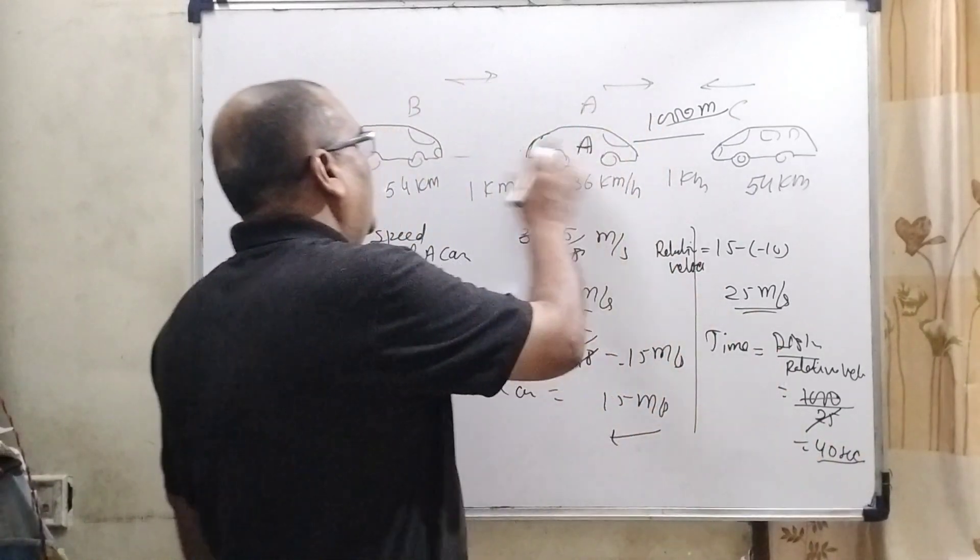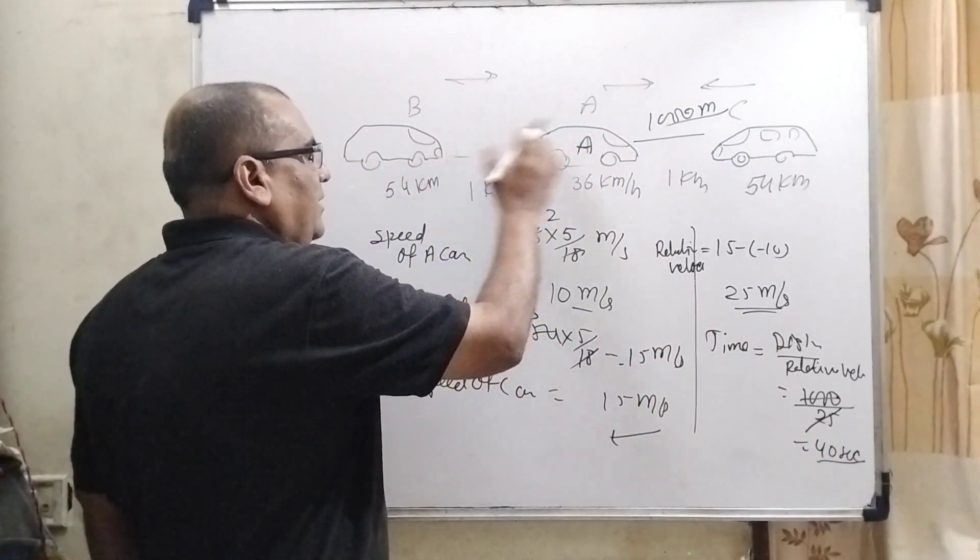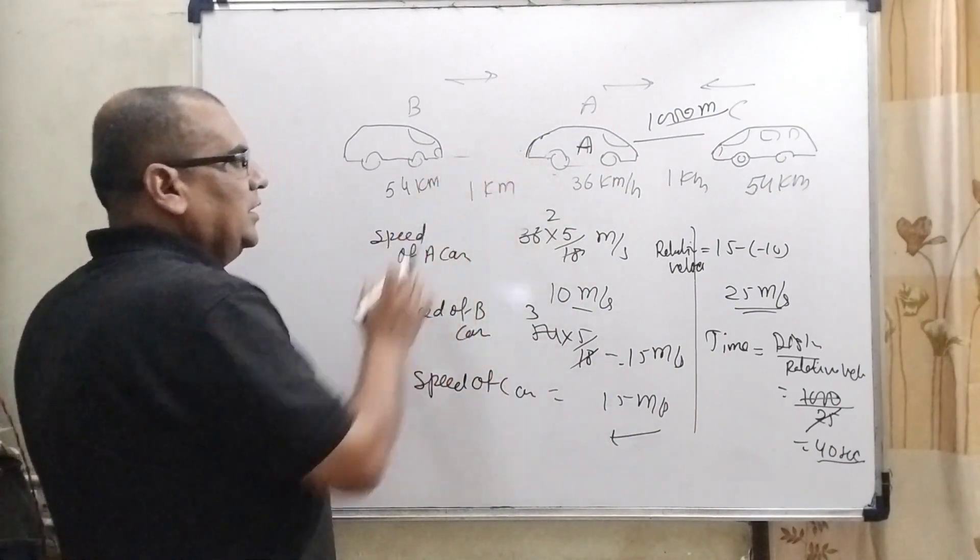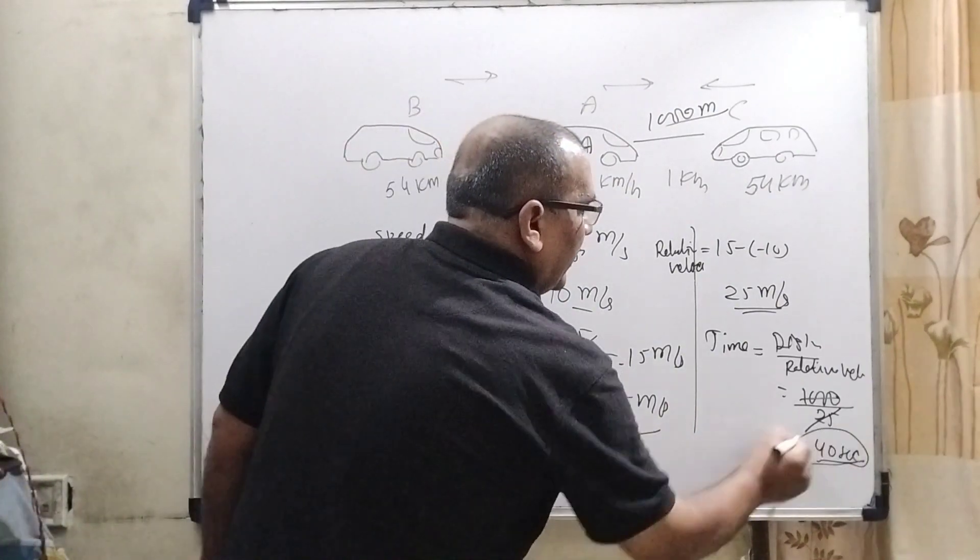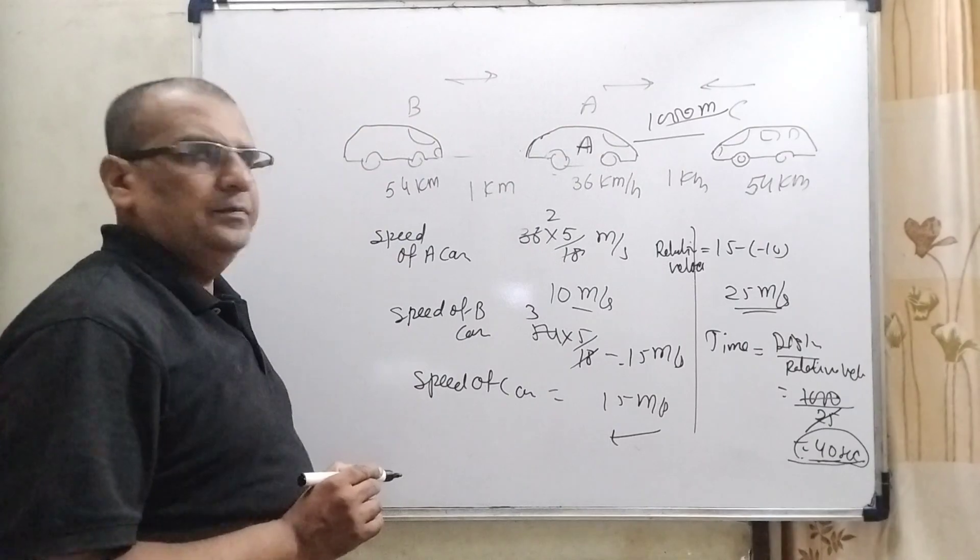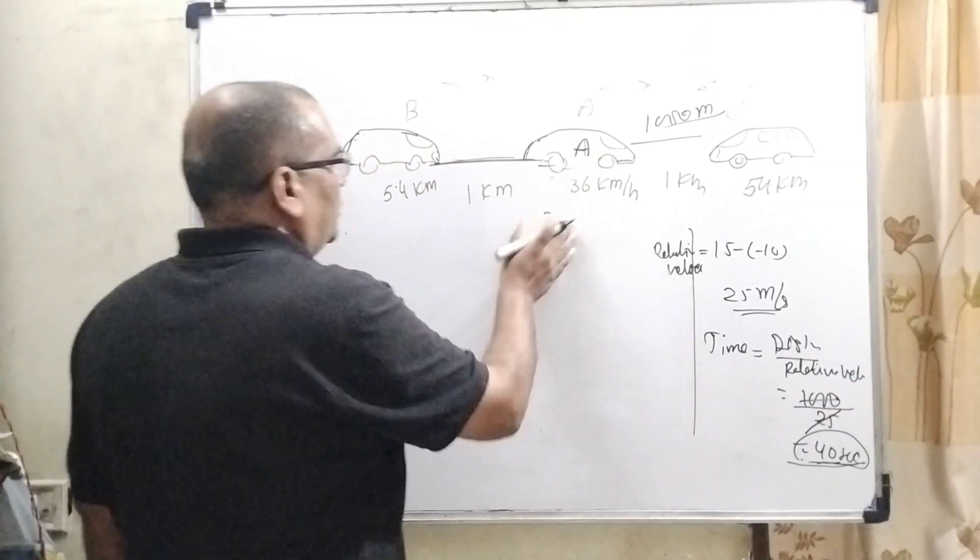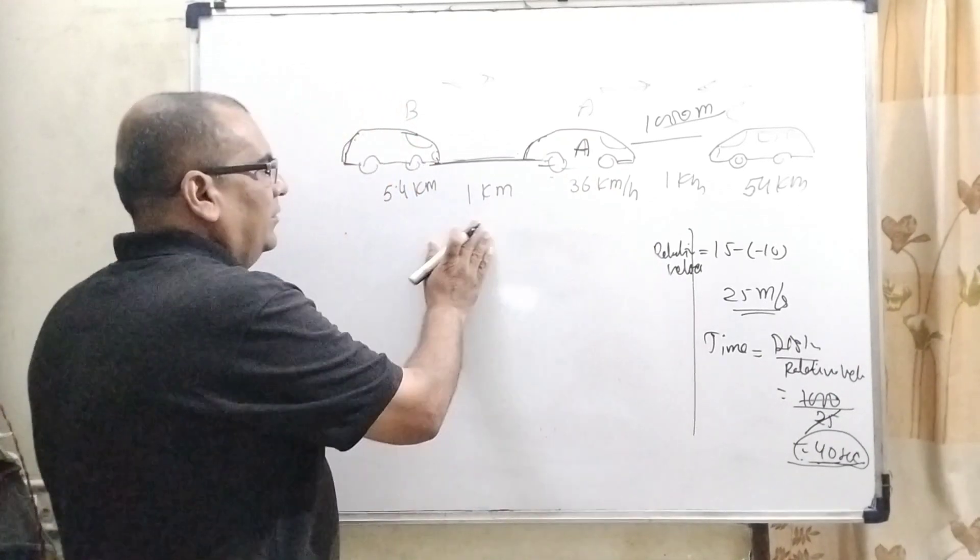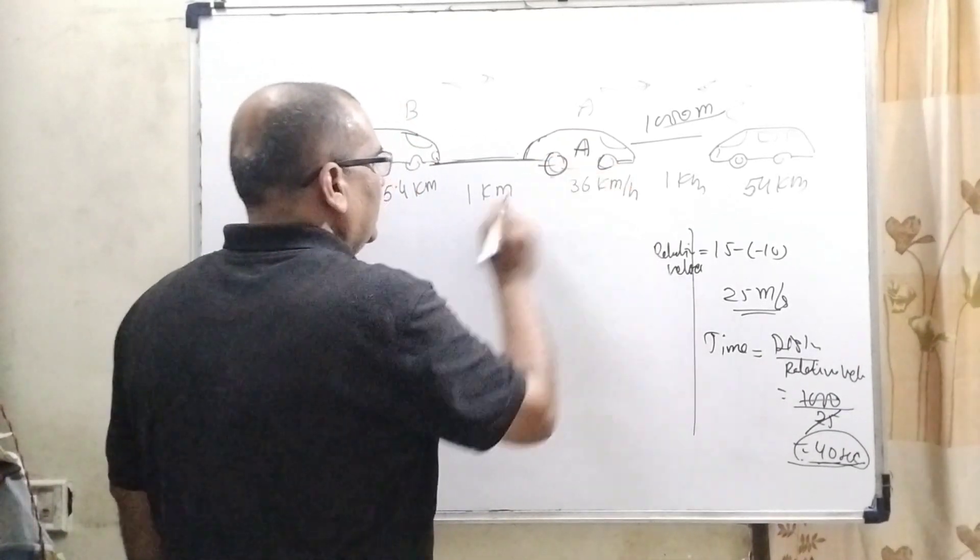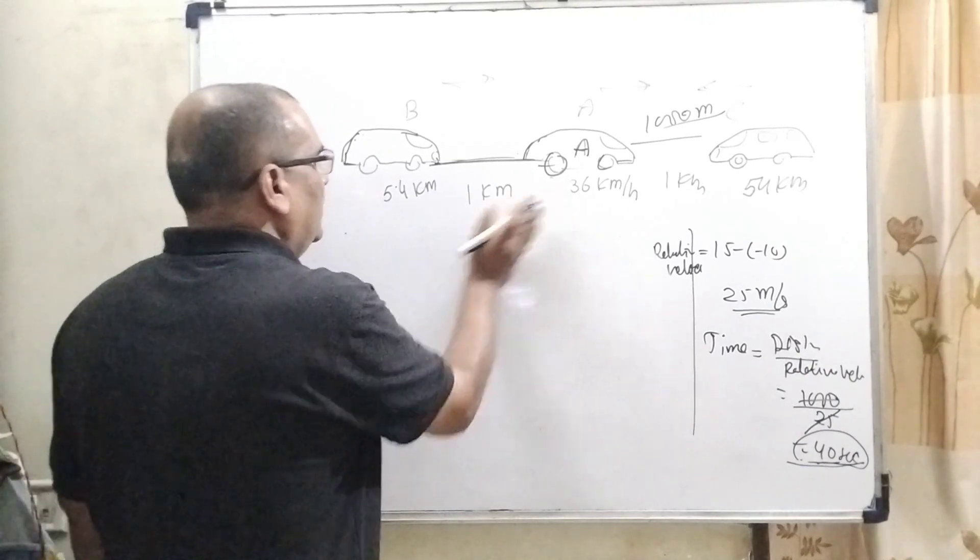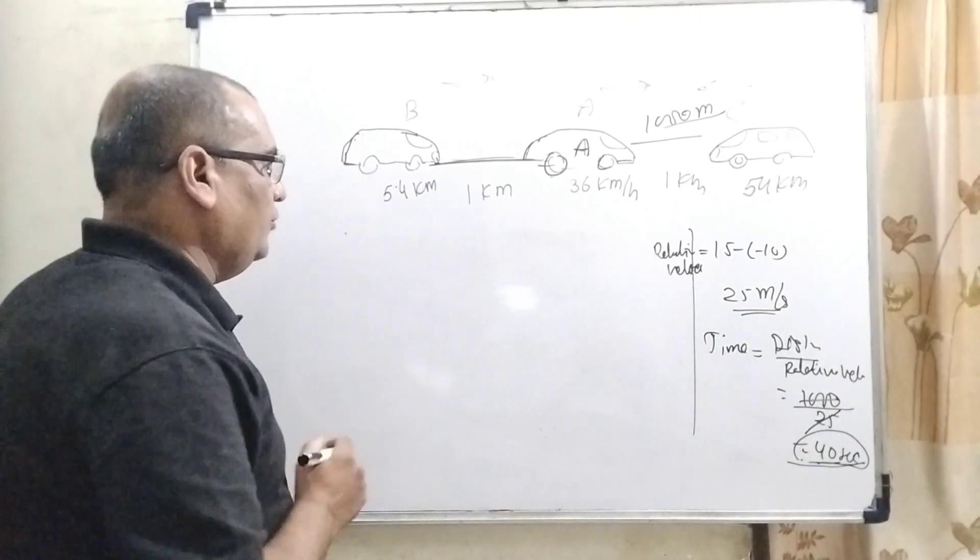So, before 40 seconds and in the same time, same time is required to accelerate. So, we get this 40 seconds. And now here to cross or overtake A without an accident, or to avoid an accident, we require an acceleration.